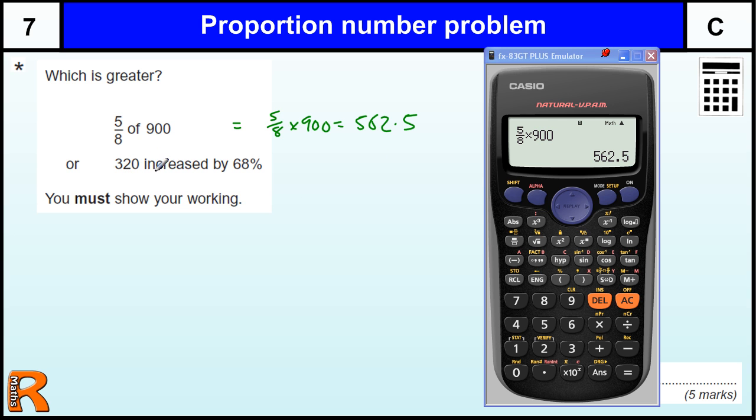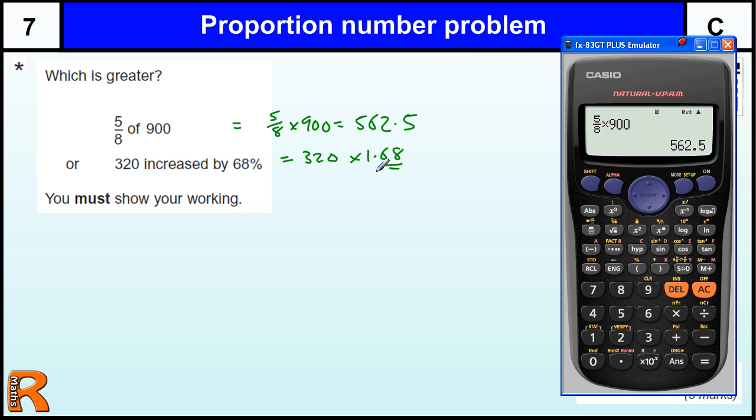And then we've got 320 increased by 68%. Now the quickest way of doing that is to times by 1.68. When you're increasing by 68%, you can just times by 1 point and then the 68. Otherwise you have to work out the 68% of 320 and then add it back on. But this is much quicker. If I was going to decrease by 68%, I would take 68 off 100 to get 32% and times by 0.32. But this is increasing, so this is going to be 537.6.